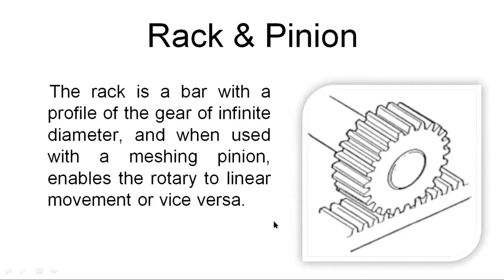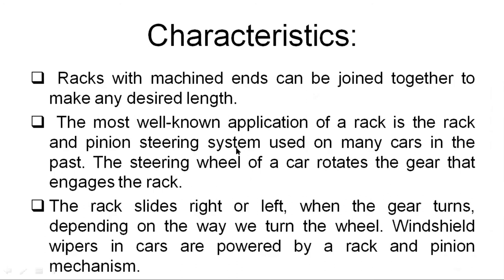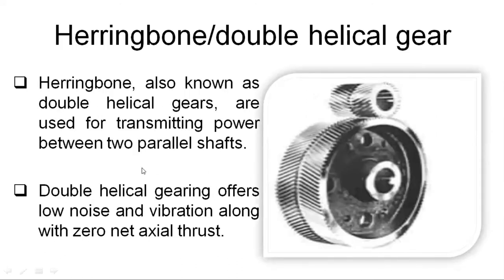Rack and pinion is used where you want to convert linear motion into circular motion, or circular motion into linear motion. These concepts you might have studied in kinematics of machines in gear kinematics — that is why I am just moving fast to cover all the varieties of gears.